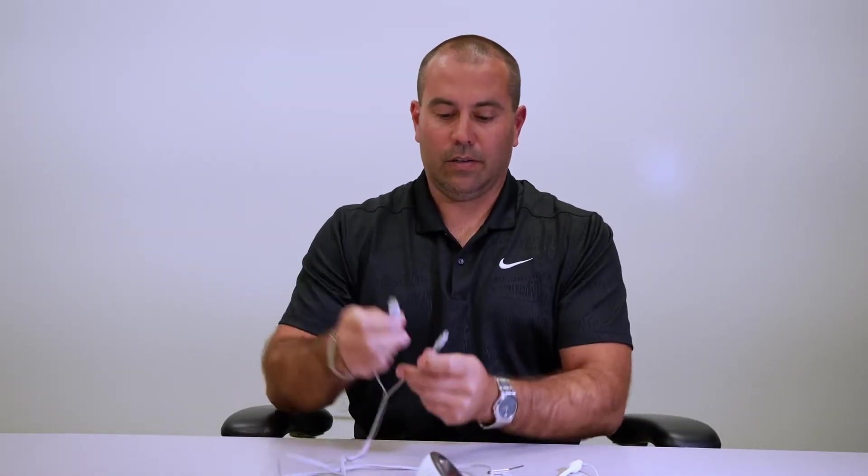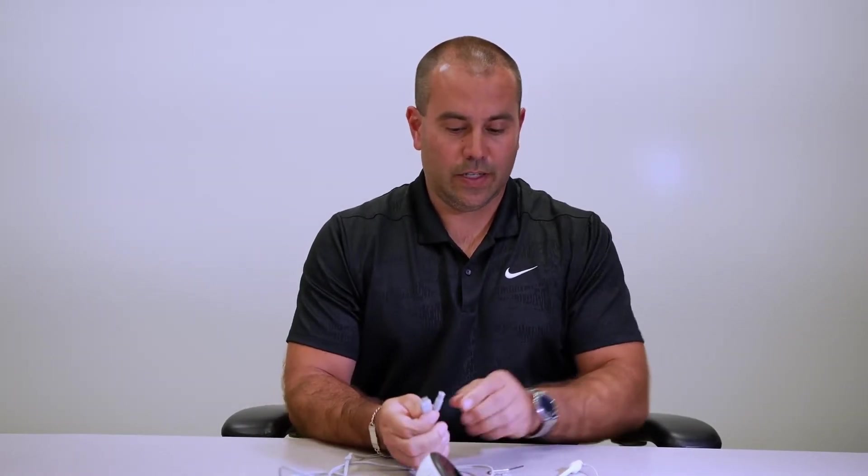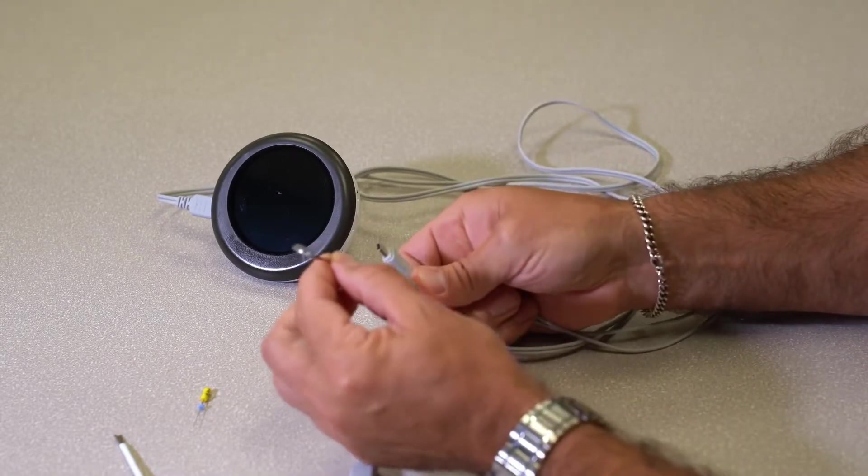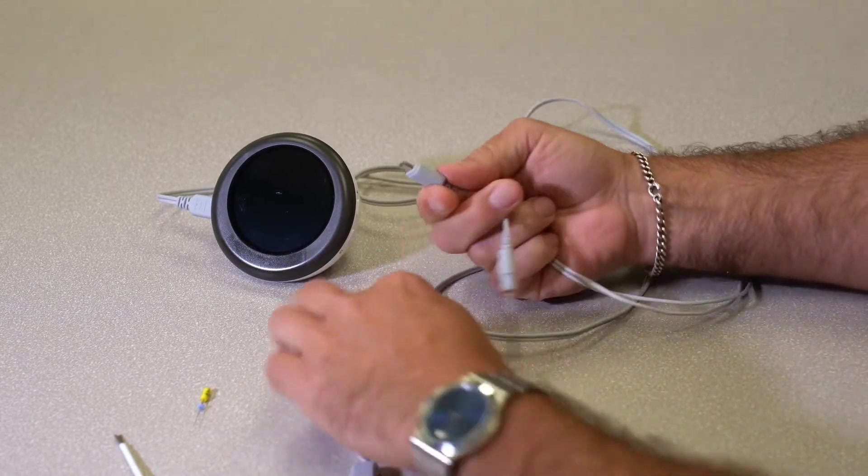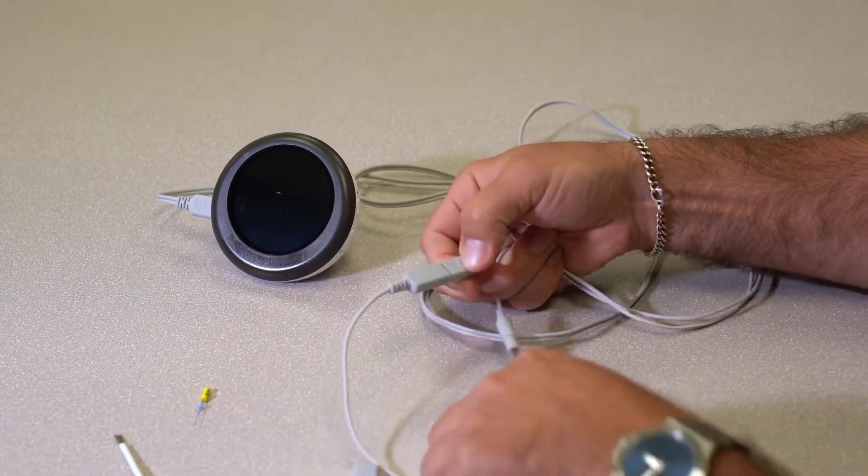And then we have, like all traditional Apex locators, two different sides here. Circle is going to be for your lip hook. Plug is going to be for your file clip.